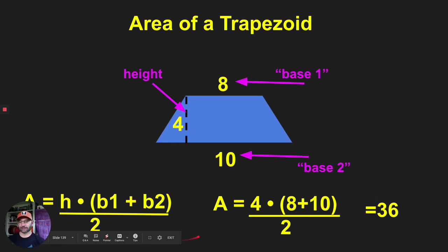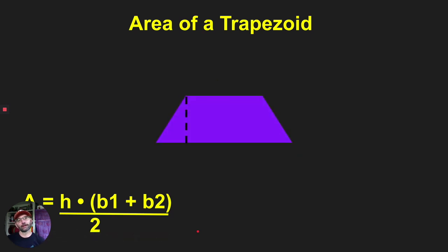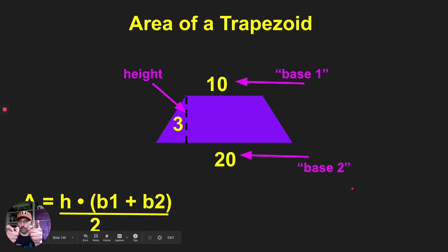Here's a purple trapezoid — let's try this one. We have ten for one base, twenty for the other base, and three for the height. Ready? Go — see if you can figure it out.